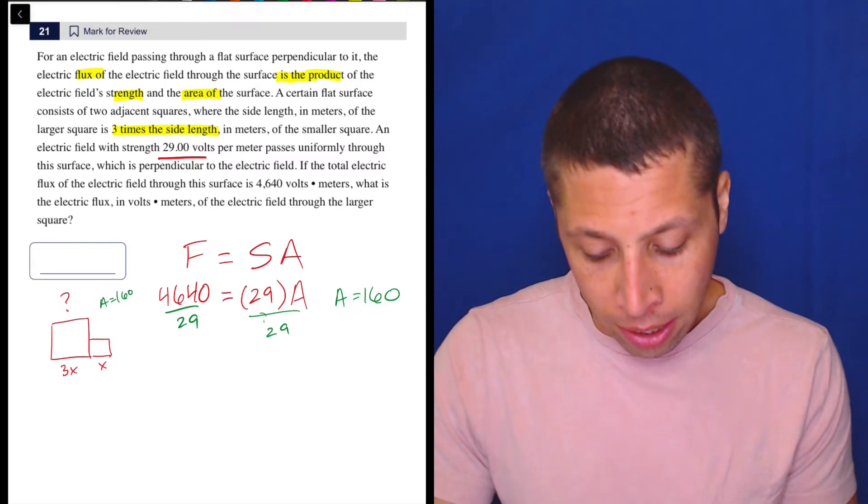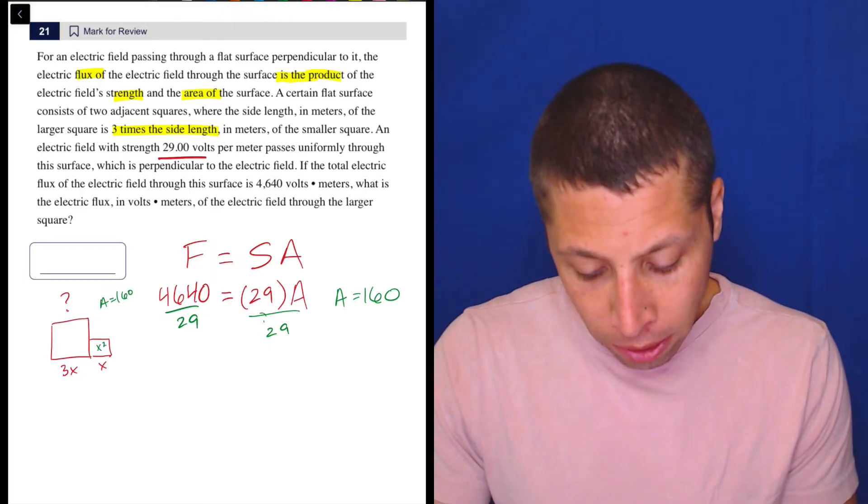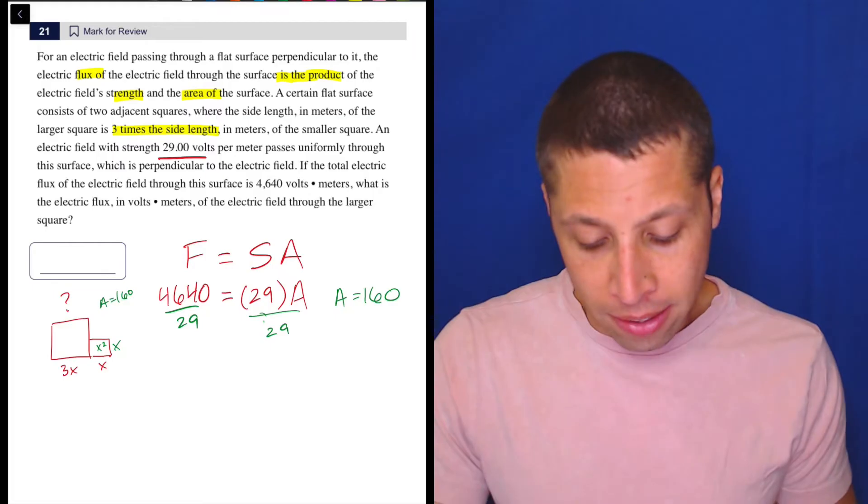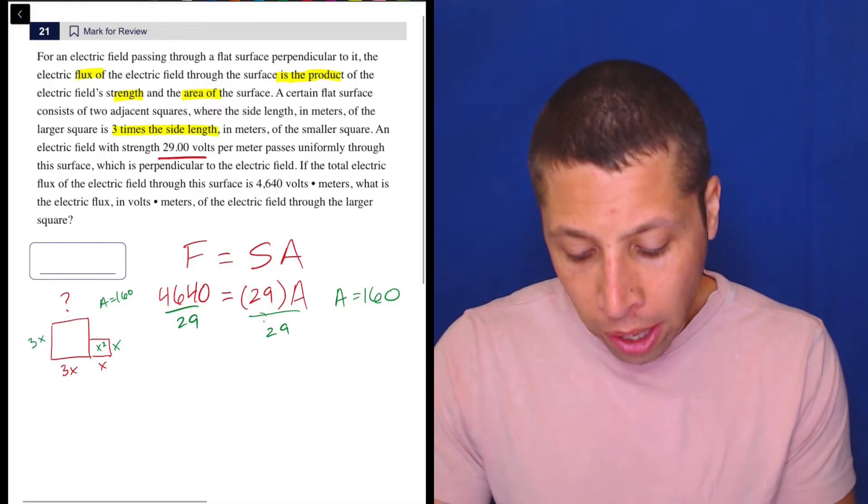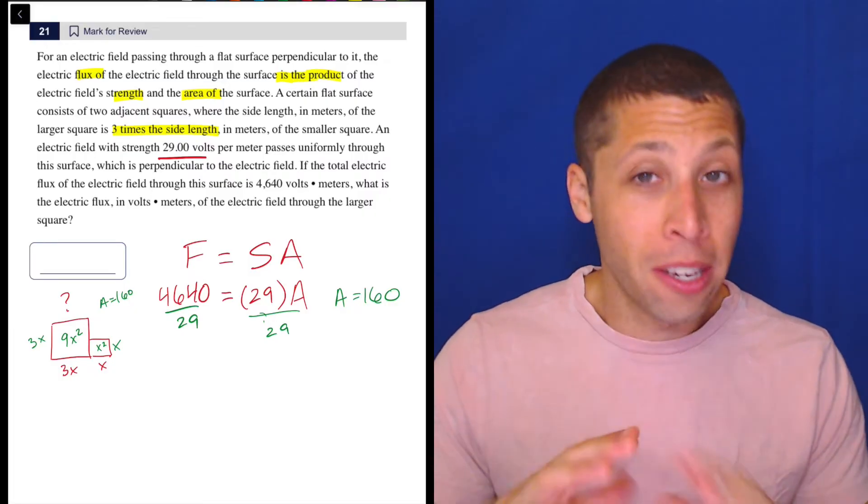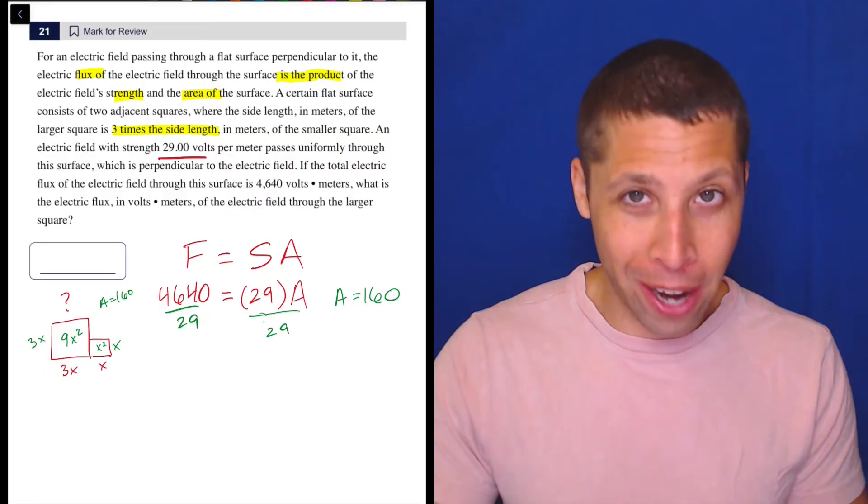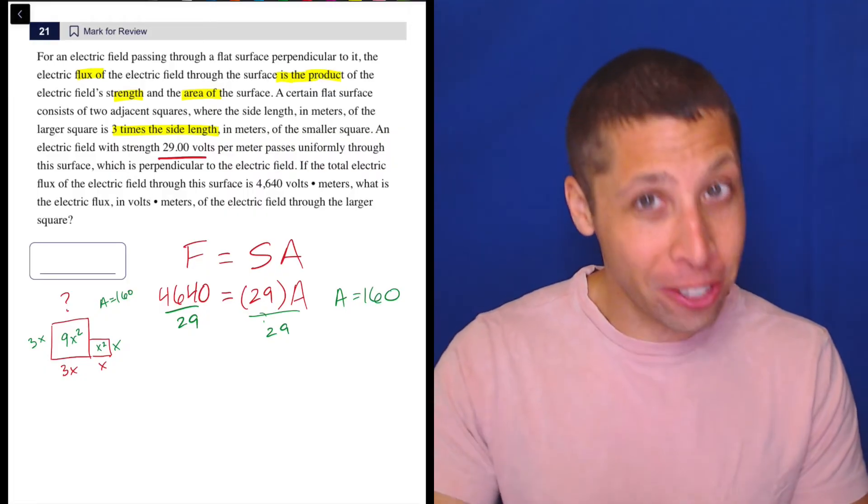So the area of the small square is X squared, because it's going to be X times X. The area of the big square is nine X squared because it's three X times three X. So I'm just using basic geometry here, how to find the area of a square, the area of a rectangle.